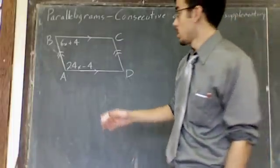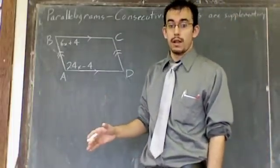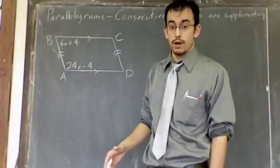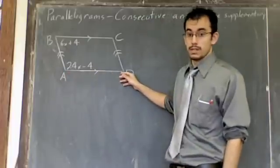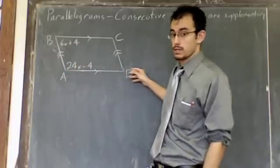What consecutive angles are, are any two angles in a parallelogram that are next to each other, that are connected by one side. So, for instance, A and D, they're consecutive because they're next to each other. They're connected by this side here.